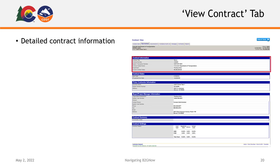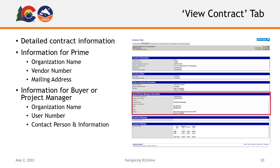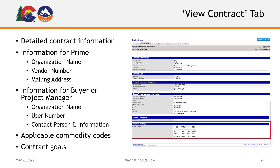Your View Contract tab is where you can access all of the detailed information for your contract, such as the contract name, contract number, the contract holder, and the current contract value. You can also find the start and projected end date for the contract. You will find information for the prime contractor, including their organization name, their vendor number, and their mailing address. This page is also where you'll find information on the buyer or project manager for the project, including their organization, user number, contact person, phone number, email, and mailing address. There will also be a list of any applicable commodity codes on this screen, and this is where you will find information on specific contract goals for DBE and ESB participation.